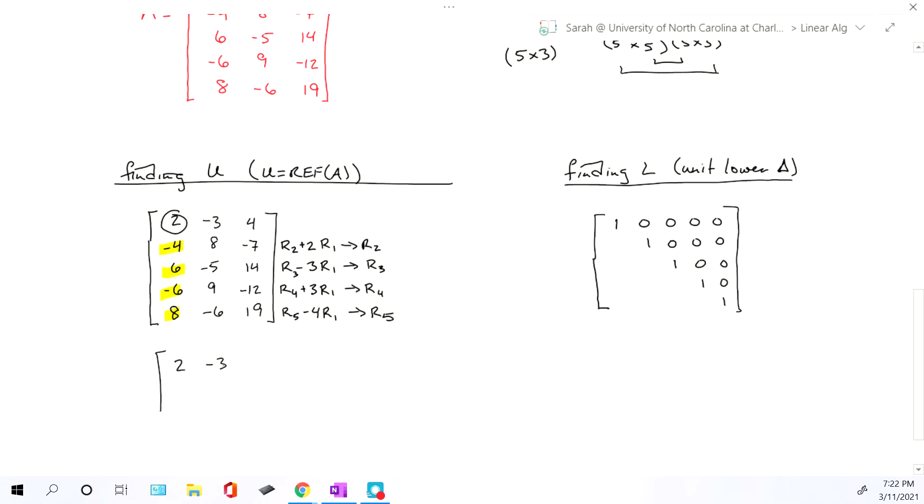And then we just have to do those row operations. First row doesn't change. Second row, when we multiply 2 by that top row and add, we'll get 0, 2, 1. Third row will end up getting 0, 4, 2. Fourth row will end up getting all 0s. And the last row will be 0, 6, 3.